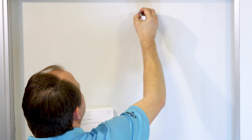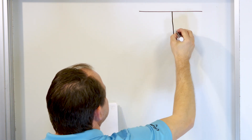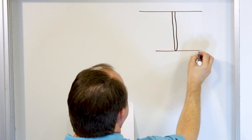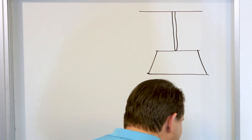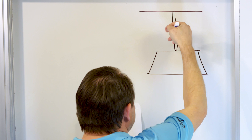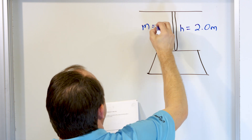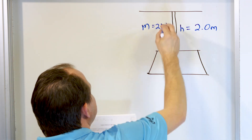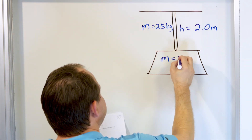Let's draw the picture — just a very basic picture. We have some roof, and a chain hanging from it, and then a chandelier is hanging from the chain. I'm going to label the length of this chain as 2.0 meters, the mass of the chain as 25 kilograms, and the mass of the chandelier down here as 50 kilograms.